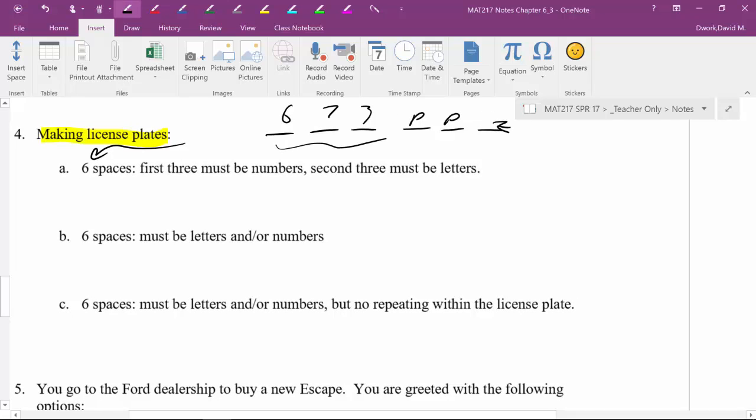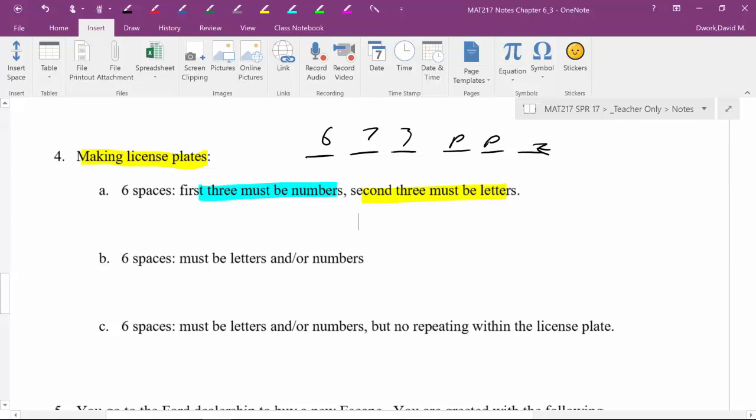So the first three had to be numbers, the second three had to be letters. Now there were no special characters, hearts, or dashes. It was letters and numbers - kind of the point of license plates. They're not supposed to be cute, they're supposed to identify bad guys and people who are breaking the law. So let's calculate how many different license plates are possible with this requirement of six spaces where the first three are numbers and the second three are letters. I want you to take yourself through decisions and choices. I have not given you any other restrictions. Pause the video, give it a try.